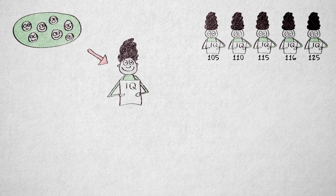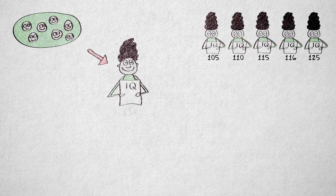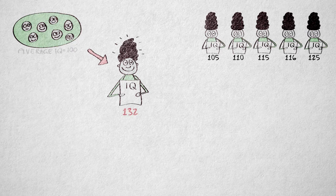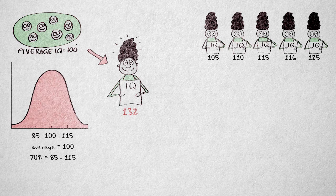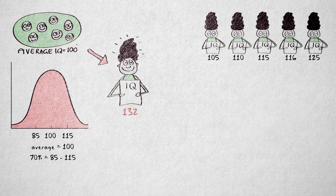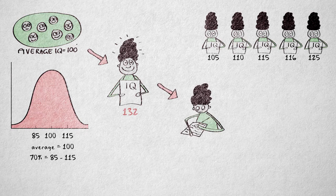Okay, now suppose we pick a random person from our pool of participants. We measure their intelligence and find a very high score of 132. The mean intelligence score is 100, and about 70% of people score between 85 and 115. So what kind of score would you expect if we measured this person's intelligence again?